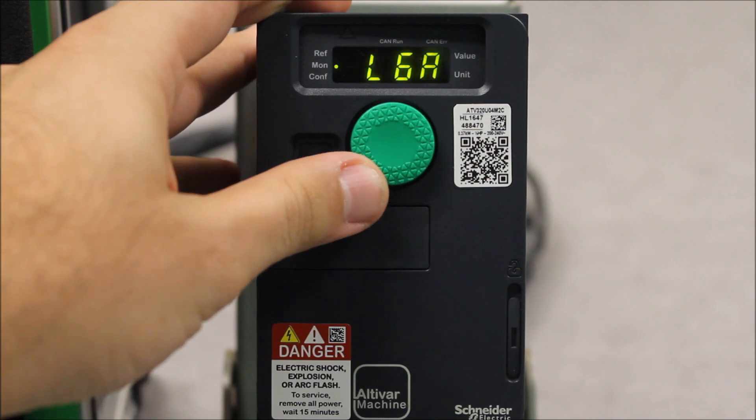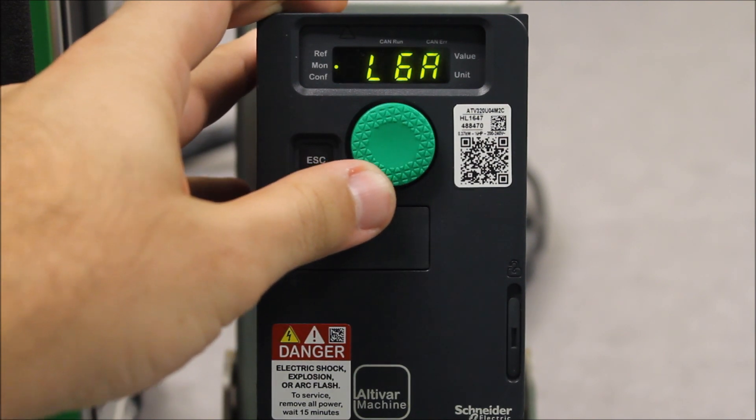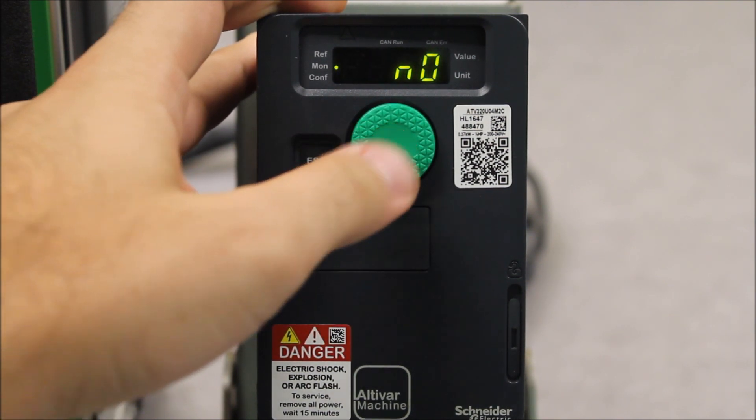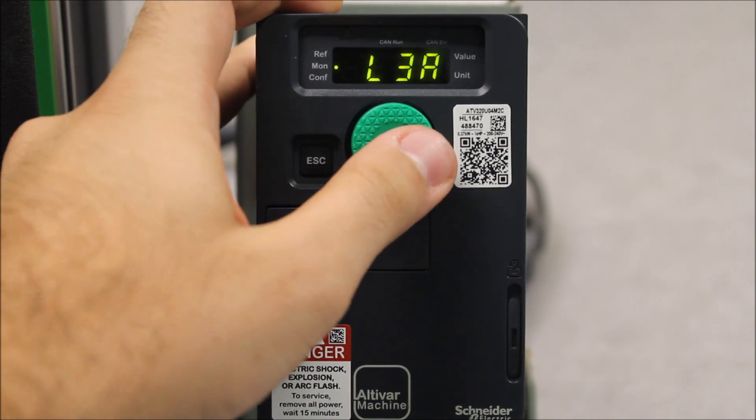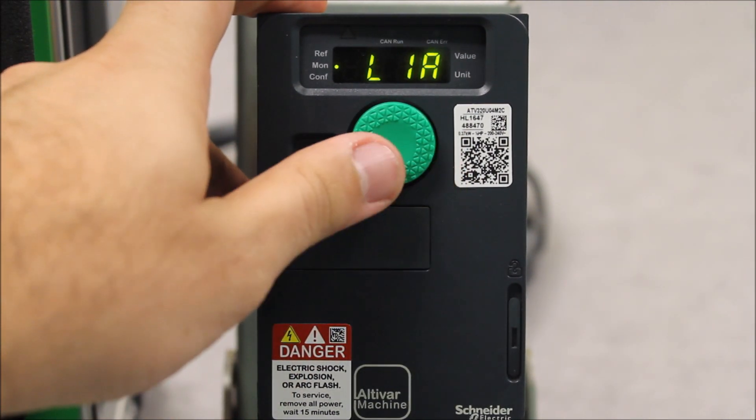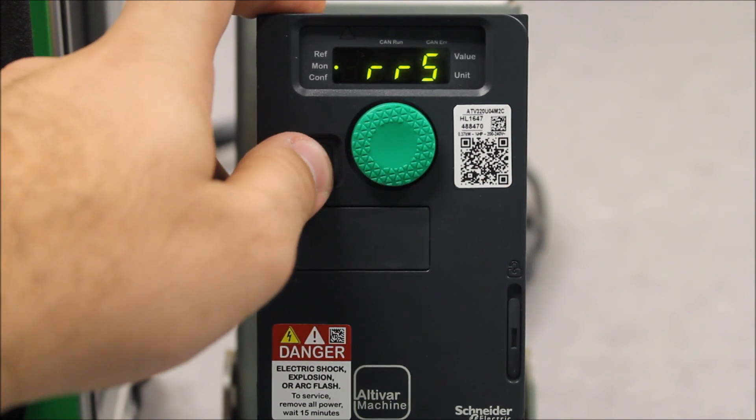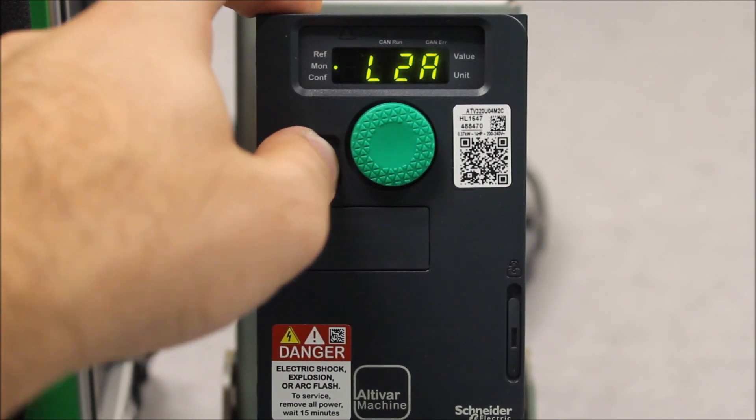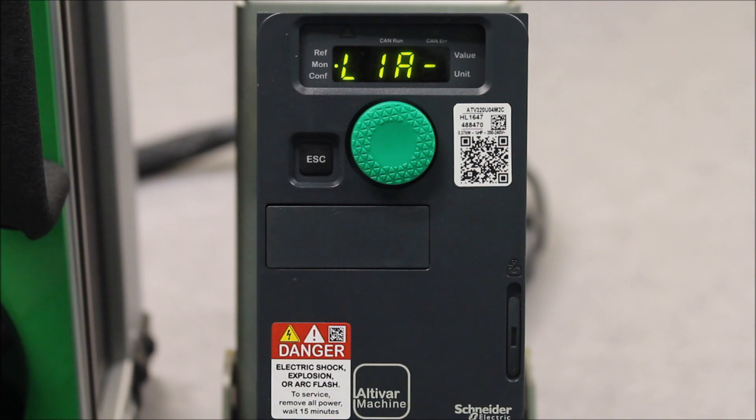it will show L1 through L6A, and if you enter on each, it will tell you what they're assigned to. For example, LIA is a forward direction command, L2A can be reverse. That shows you the assignments of what those logics are programmed as on LIA,